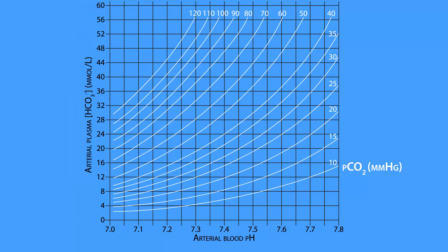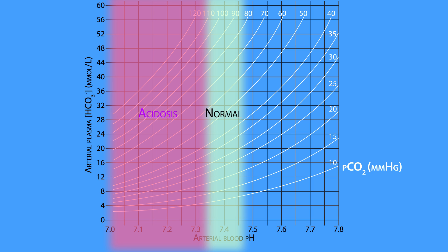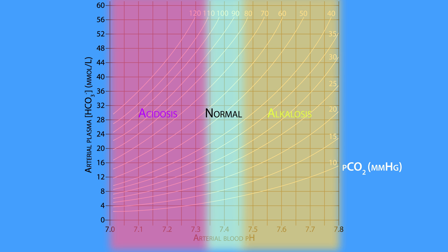Now let's cover the basics. Normal pH ranges from 7.35 to 7.45. If the pH drops below 7.35, it's referred to as acidosis, and if the pH rises above 7.45, it's referred to as alkalosis.